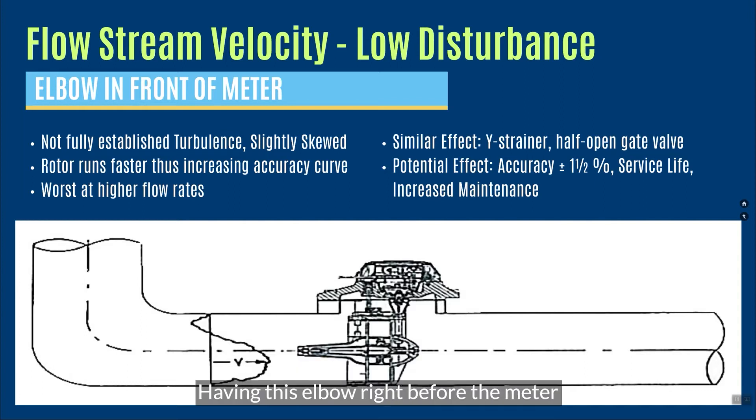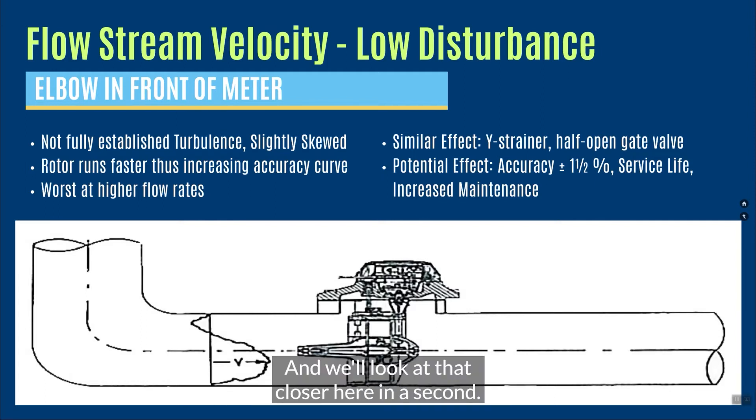Having this elbow right before the meter is going to give us a skew in velocity. Now what's going to happen here is this rotor is going to start to be pushed sort of in an odd way. And we'll look at that closer here in a second. The thing that I also want you to understand is this can have a potential effect on the accuracy of the meter.